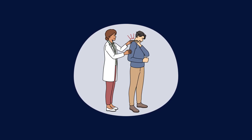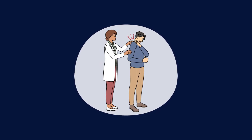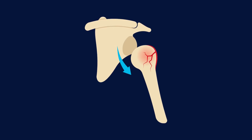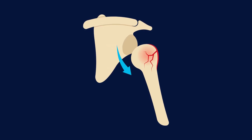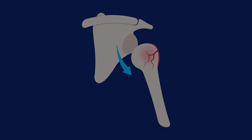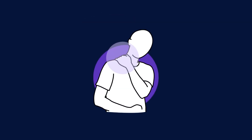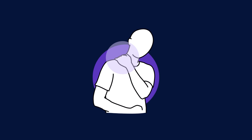In this condition there's an incomplete or temporary dislocation of the shoulder joint where the head of the upper arm bone partially slips out from the socket of the shoulder blade. This condition is often associated with symptoms such as localized pain, muscle weakness, numbness, and a notable decrease in the range of shoulder movement.